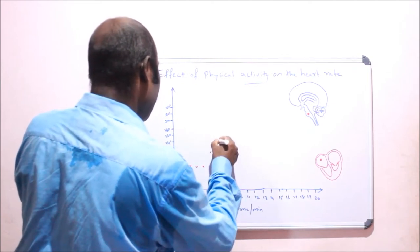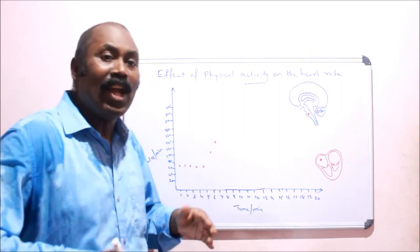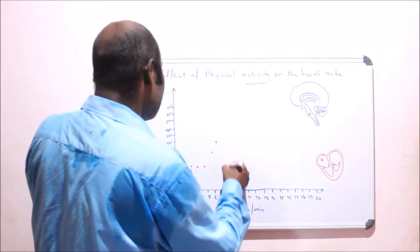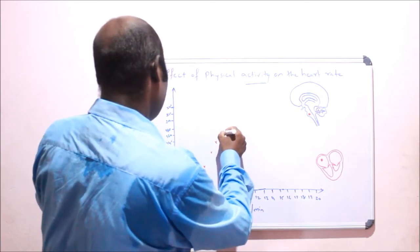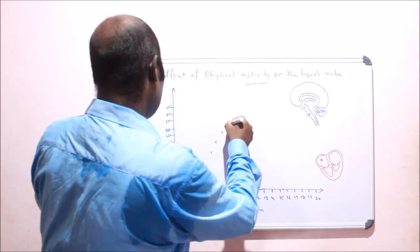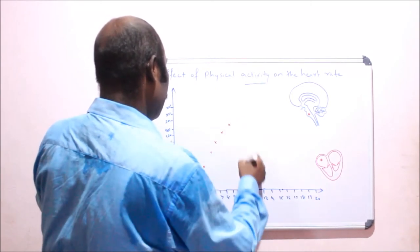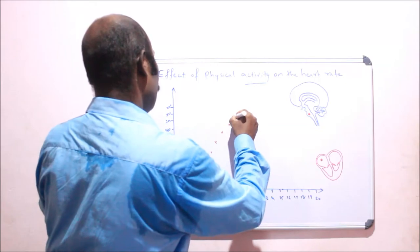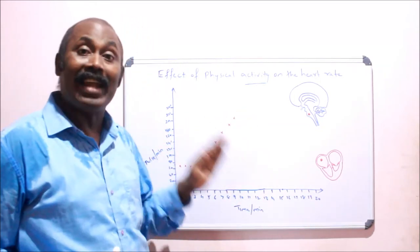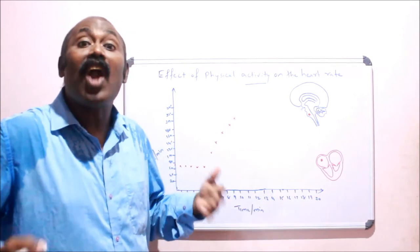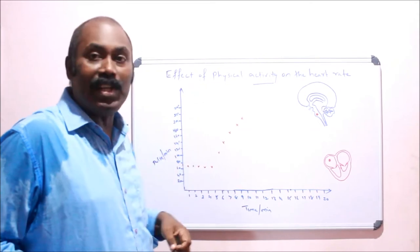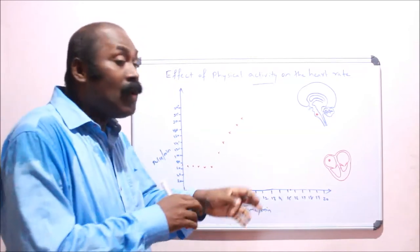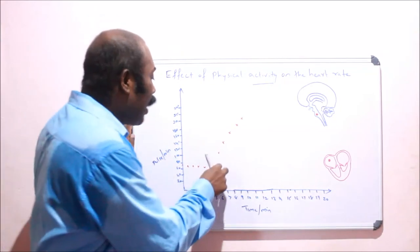By the seventh minute, the pulse rate has increased to 140. You continue jogging, noting your pulse every minute, and you can see it going up. By the tenth minute, your pulse rate has reached around 200 beats per minute. So during physical activity — in this case on-spot jogging — the heartbeat increases significantly.